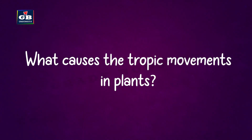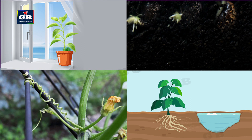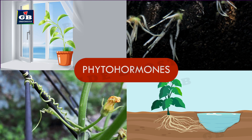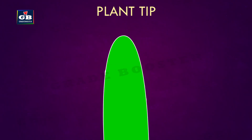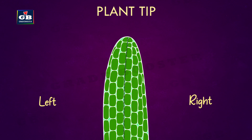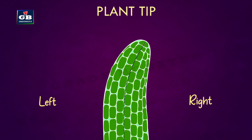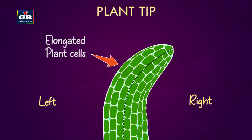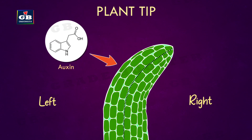What causes the tropic movements in plants? Tropic movements in plants are caused due to some special chemical compounds called phytohormones. For example, if the plant tip has to bend towards the right, the cells in the left side part of the tip get elongated, making the plant bend towards the right. The elongation of cells in the left half of the plant tip is caused due to a phytohormone called auxin.